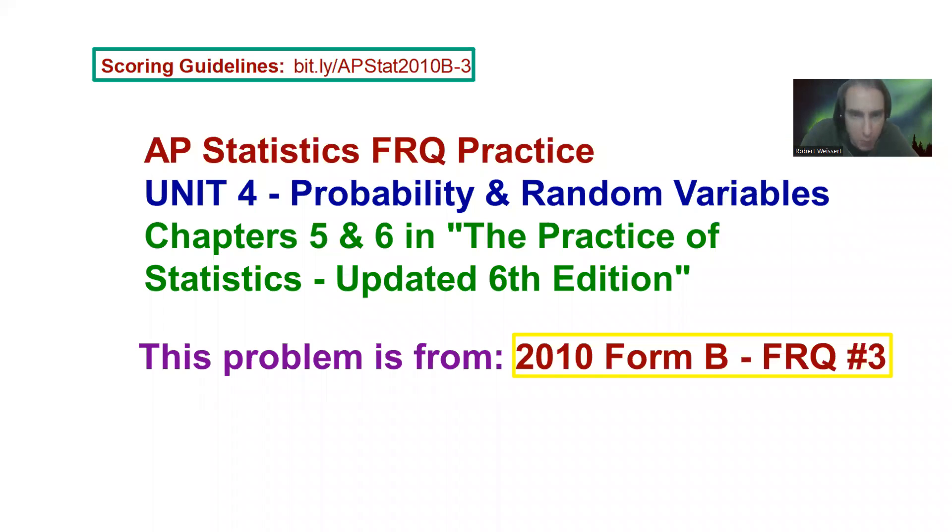Hello, guys. In this video, we're going to be going over another AP Statistics Free Response Question. This is in Unit 4, Probability and Random Variables. In the Practice of Statistics updated 6th edition textbook, you'll find this in Chapters 5 and 6, dealing with the probability stuff. This is specifically from 2010 Form B, Free Response Question number 3.